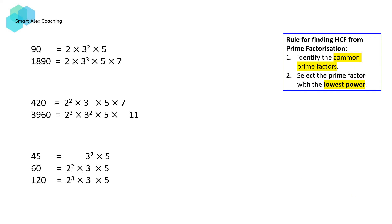So here are some more examples on how to apply the rule to find the HCF given the prime factorization written in index form. The first set of numbers, we've got 90 and 1890. We're first going to identify the common prime factors, which are 2, 3, and 5.